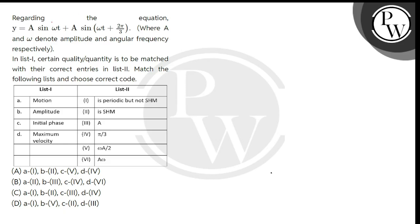Hello bachhu, let's read the question regarding the equation y equal to a sin omega t plus a sin omega t plus 2 pi by 3, where a and omega denote amplitude and angular frequency respectively. In list 1, certain quantities are to be matched with their correct entries in list 2. Match the following lists and choose the correct option.